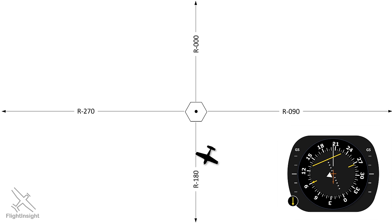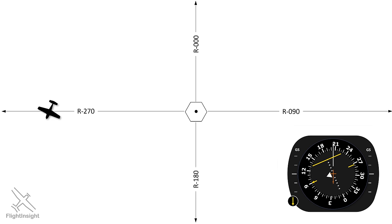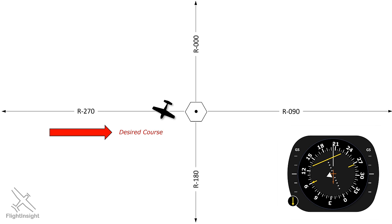Now we don't know yet where this aircraft is in relation to the station. Notice the green course selector arrow — it's pointed at 090. Also notice the white triangle pointed the same direction as the green arrow, marking the TO indication. What the instrument is set up to do is have us fly inbound to the station on a 090 heading. If we were to fly inbound to the station on a 090 heading, it would put us on this radial right here. However, if this is where we were located, the needle would be centered, but it's not — it's deviated to the right.